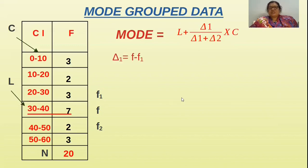What is delta 1? It is F minus F1. What is delta 2? It is F minus F2. You know what is F, the highest frequency is F. The preceding one is F1, that is 3, and the succeeding one is 2, that is F2.